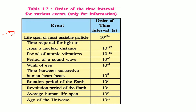This is the order of time interval for various events. The lifespan of the most unstable particle is 10⁻²⁴ seconds. Time required for light to cross a nuclear distance is 10⁻²² s. Period of atomic vibrations is 10⁻¹⁵ s. Period of a sound wave is 10⁻³ s. A wink of an eye is 10⁻¹ s. Time between successive human heartbeats is 10⁰ s. Rotation period of earth is 10⁵ s. Revolution period of earth around the sun is 10⁷ s. Average human lifespan is 10⁹ s. Age of the universe is 10¹⁷ seconds.